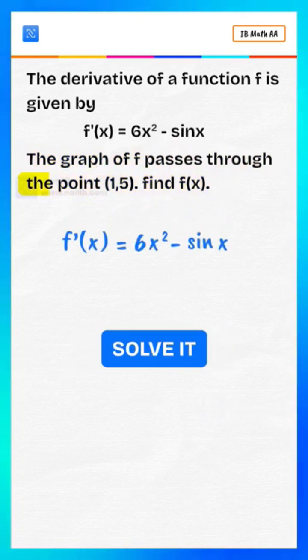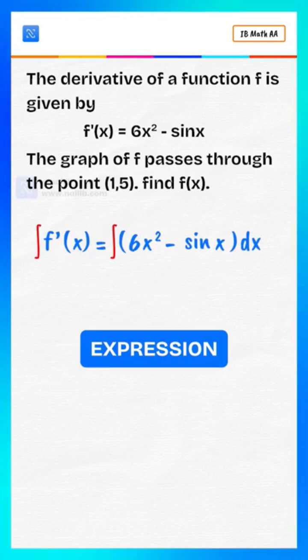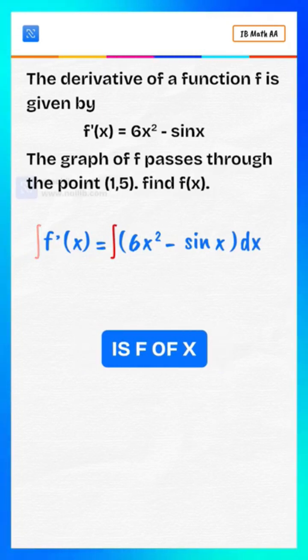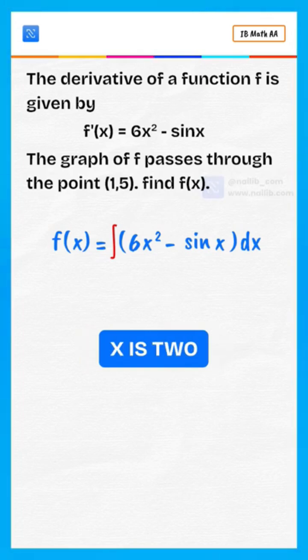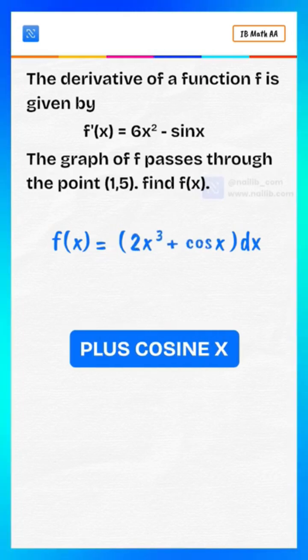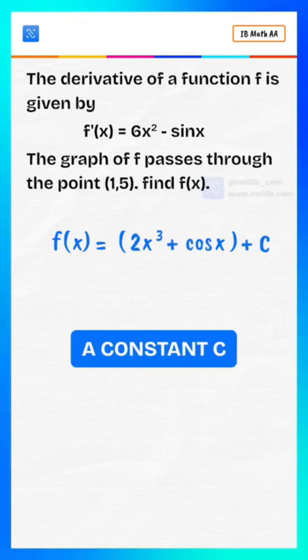Alright, so let's solve it. Integrate the expression. Integral of f prime of x is f of x. The integral of 6x squared minus sine x is 2x cubed plus cosine x plus a constant C.